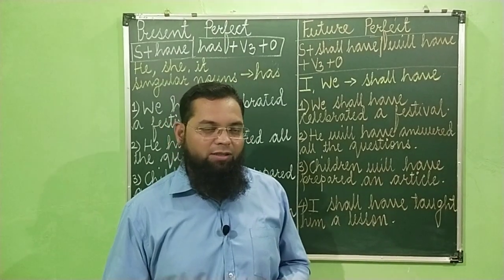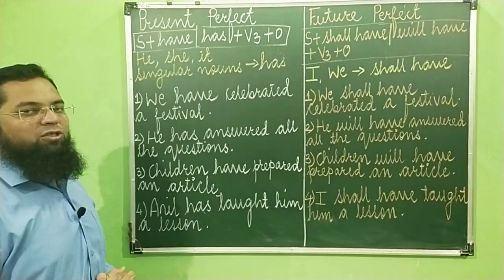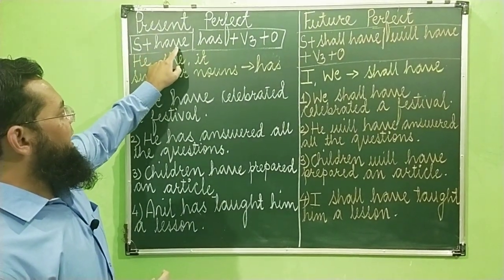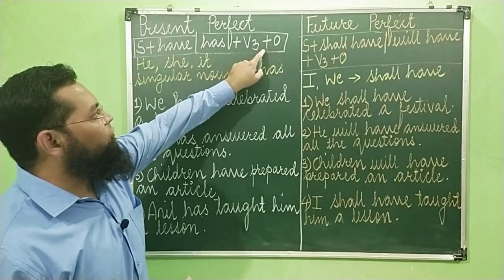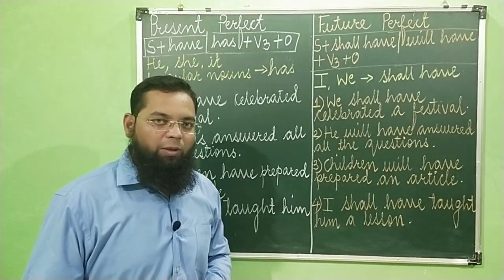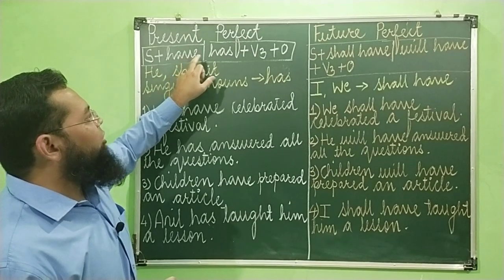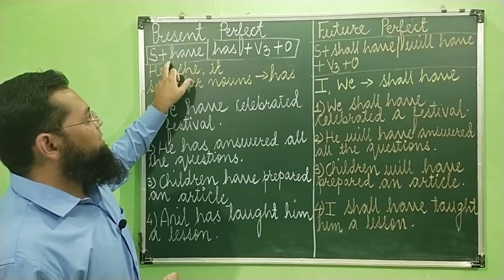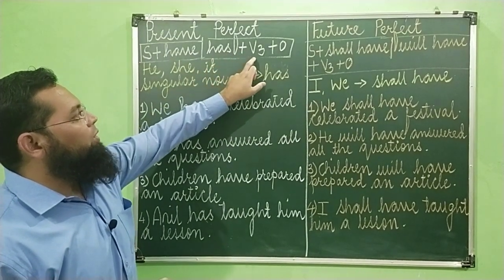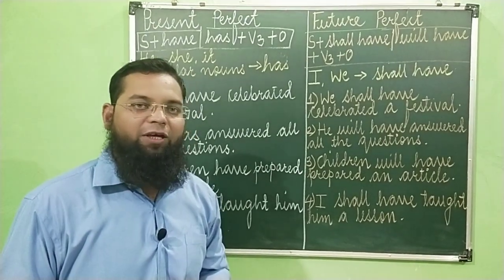So let's have a look at present perfect tense. The modified equation for present perfect tense is: subject plus have or has plus verb in third form plus object. Present perfect tense ki equation mein subject ke baad ya toh hum have use karenge ya has use karenge, plus verb in third form, plus object.